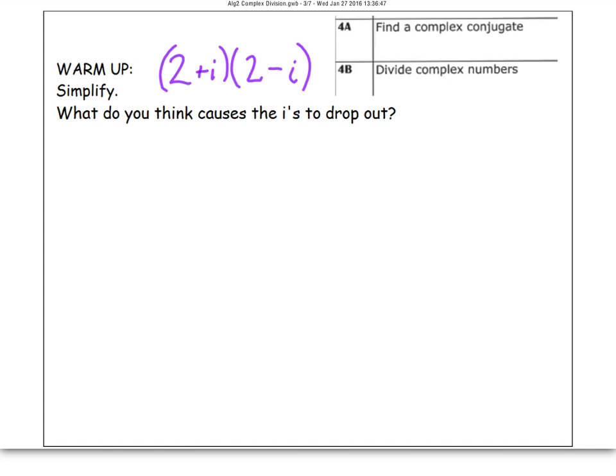The number 2 plus i is complex, so is the number 2 minus i. These two numbers are considered complex conjugates of each other, because the only way they're different is the sign of the imaginary number is opposite. The real number stays the same.